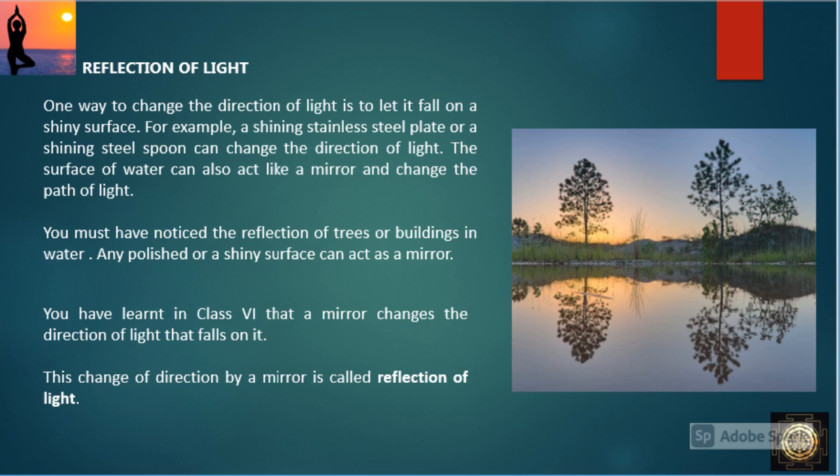Reflection of light: one way to change the direction of light is to let it fall on a shiny surface. For example, a shining stainless steel plate or a shining steel spoon can change the direction of light. The surface of water can also act like a mirror and change the path of light.